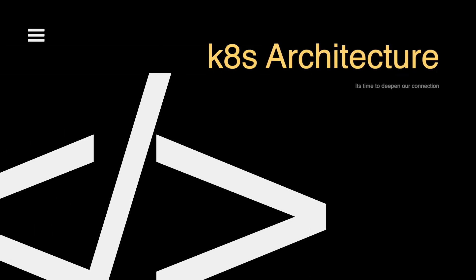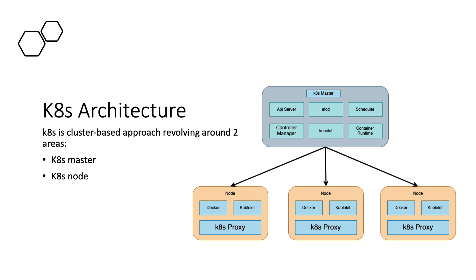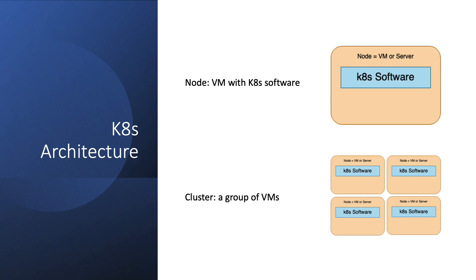Now let's look at the architecture of Kubernetes. Kubernetes architecture consists of sets of nodes. A node is a machine — a physical machine if running on-premise, or a VM with Kubernetes software set up. A node is a worker machine where containers are launched. We need more than one node because if one machine running our containers fails, another one keeps the application running. A set of nodes running together is called a cluster — two or more nodes running simultaneously, basically a group of virtual machines.